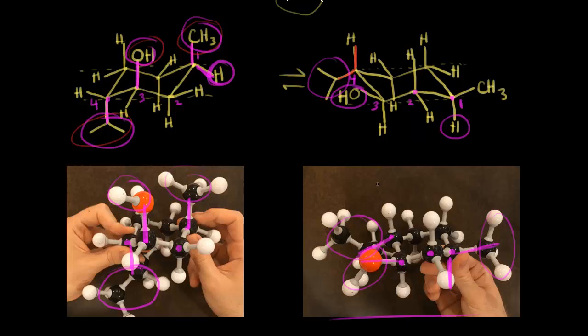So if all three substituents are out to the side, this is the more stable conformation. This is an easy one to figure out the more stable chair conformation. Sometimes it's a little bit harder and you might have to consult a table and look at some of the energy differences between the two positions.